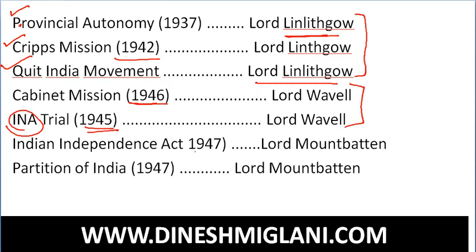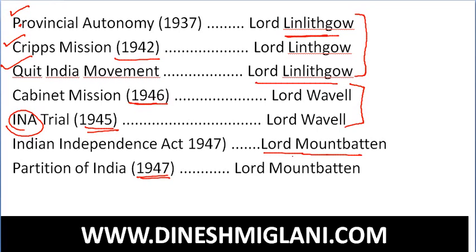At the time of Independence, Lord Mountbatten was the Governor General of India. At the time of Partition, he was the Viceroy. After India became independent, he was made the first Governor General of India. These are the major facts.